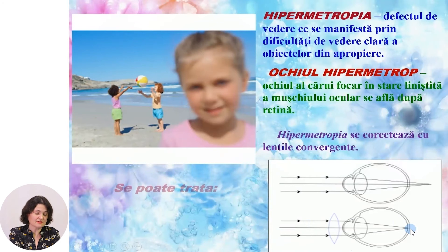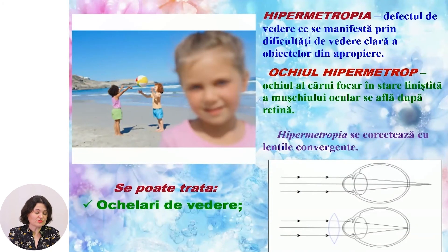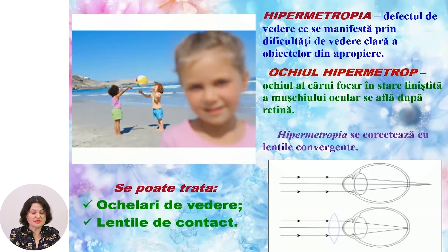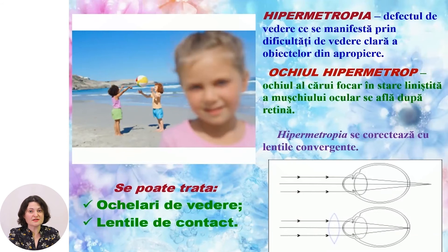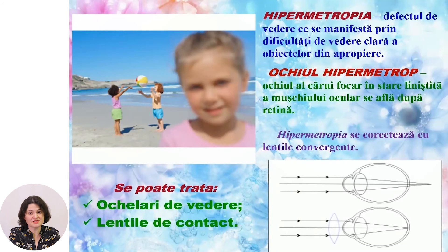How can hypermetropia be treated? Hypermetropia is treated with prescription glasses or contact lenses. If hypermetropia appears with advancing age due to the crystalline lens losing its ability to change curvature, then myopia unfortunately appears due to our own negligence.